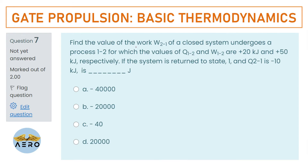Find the value of work done for the 2-to-1 process. A closed system undergoes process 1 to 2 where Q₁₂ = +20 kJ and W₁₂ = +50 kJ respectively. If the system is returned to state 1 and Q₂₁ = −10 kJ, find W₂₁ in joules.